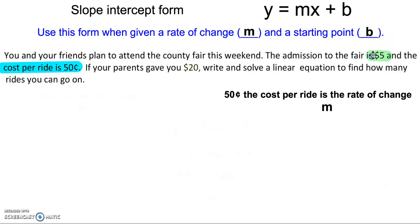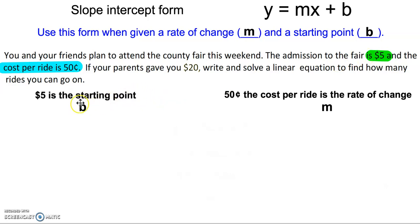So we have the $5 that it costs us to get in. That's like our starting value, our starting point, our b. Now, the x and y — we really do need to identify what the x and y are going to stand for in this problem. So we're going to write let statements for that.